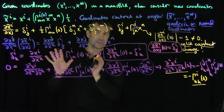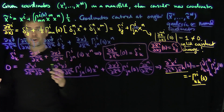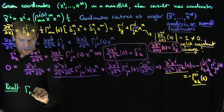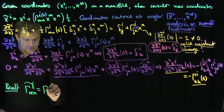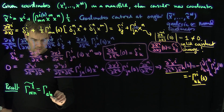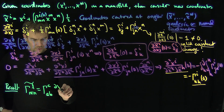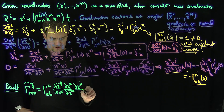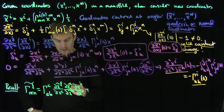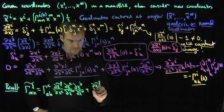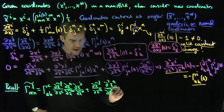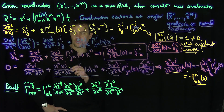We are now going to show that the Christoffel symbols in these new coordinates vanish at the origin. Recall the transformation law for Christoffel symbols: gamma_lmn tilde equals gamma_abc times partial x_tilde_l over partial x_c times partial x_a over partial x_tilde_m times partial x_b over partial x_tilde_n, plus partial x_tilde_l over partial x_a times partial squared x_a over partial x_tilde_m partial x_tilde_n.